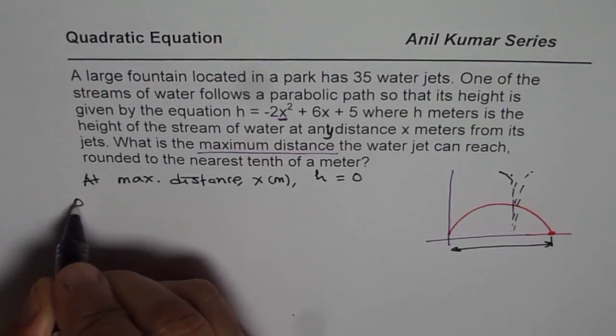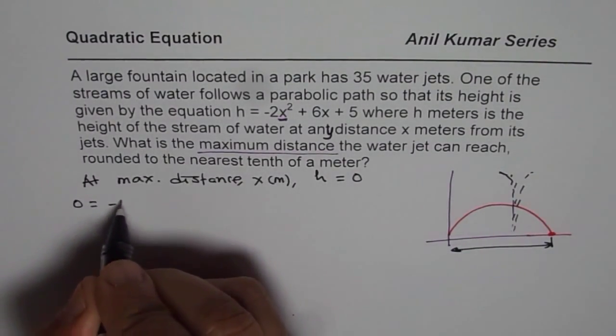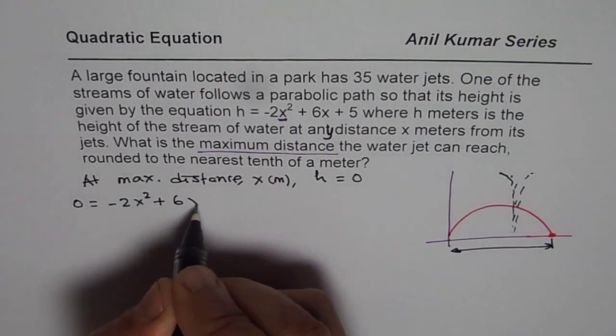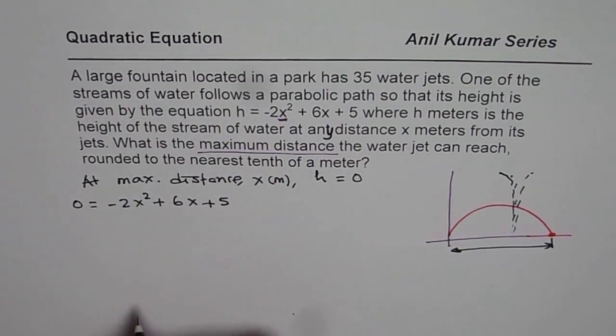And therefore we will write 0 for height in the given equation, which is minus 2x squared plus 6x plus 5, and then find the answer.